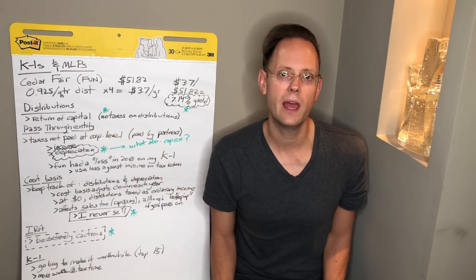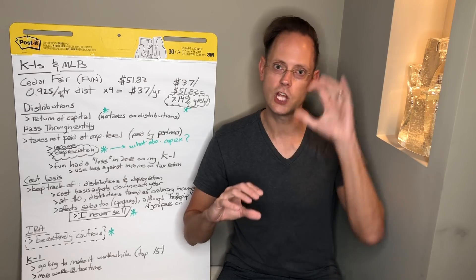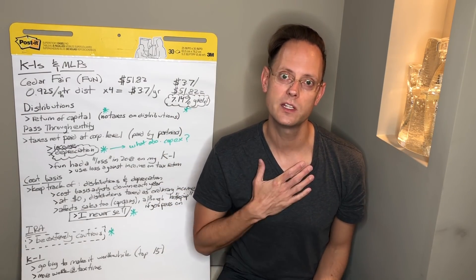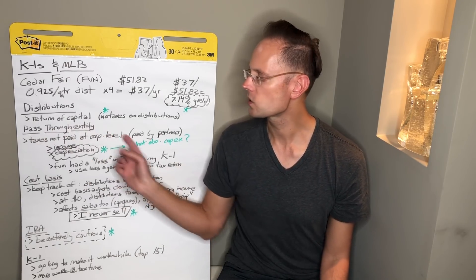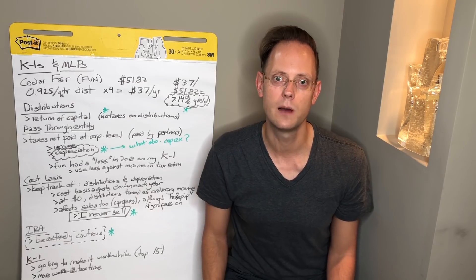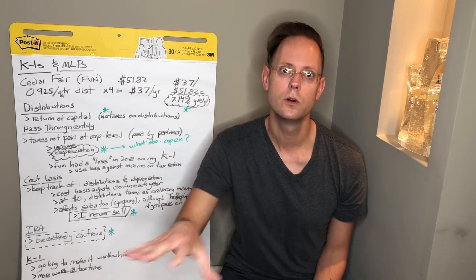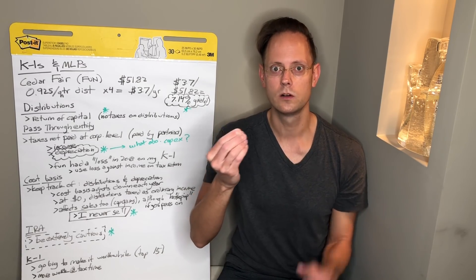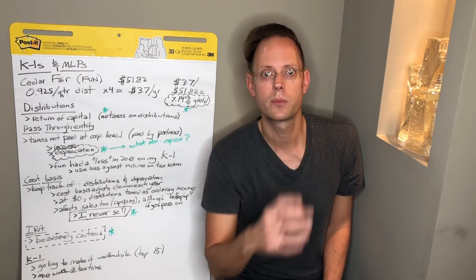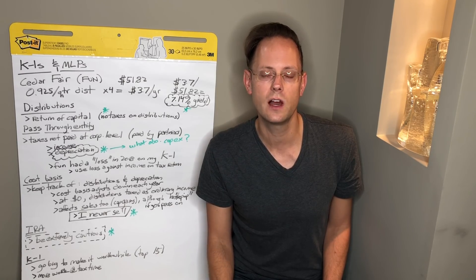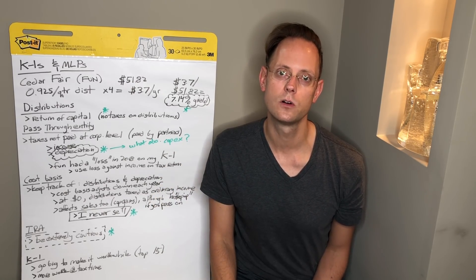One thing to keep in mind is the pass-through entity structure. Master Limited Partnerships are basically partnerships — there are general partners and limited partners. They're publicly traded, and I'm a limited partner; I own partnership units in the Cedar Fair partnership structure. At the corporate level, they don't pay taxes. What they do is pass that through to the partners like myself, and then partners receive a K-1 each year — a tax form that shows your share of the profits based on your percentage ownership. Based on the partner's percentage ownership, that partner is responsible for taxes.